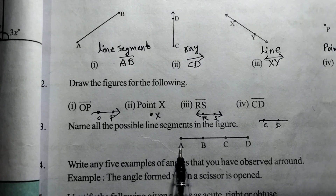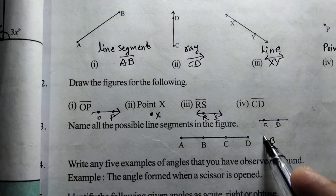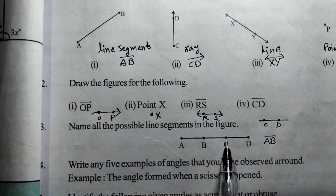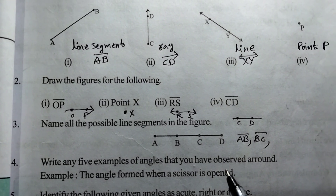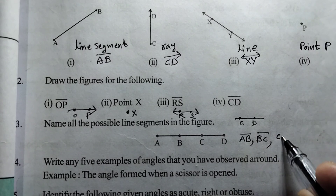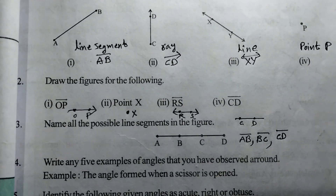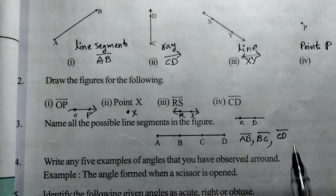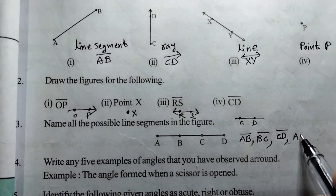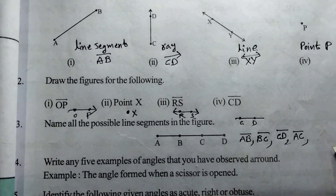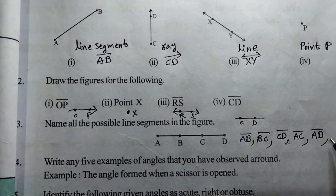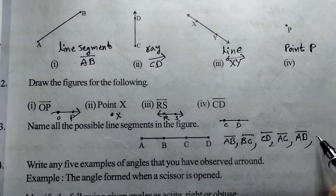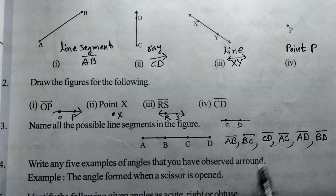For the third question, AB is the first line segment, BC is the second line segment, CD is the third line segment. AC, AD, and BD also form line segments. So the total is six line segments formed.